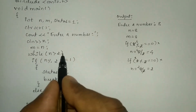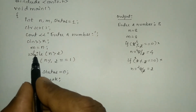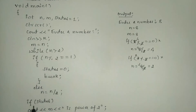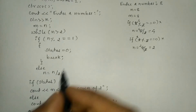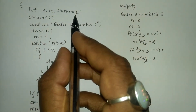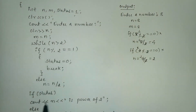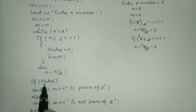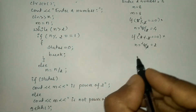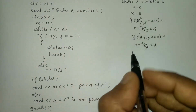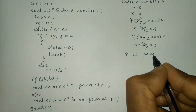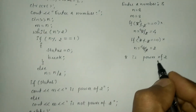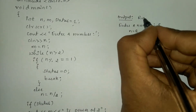Once the while condition is false, control comes out and checks the status. Status was initialized as 1, so it is true. cout m — the value stored in m is 8 — so it prints "8 is power of 2". Let us consider this as run 1.